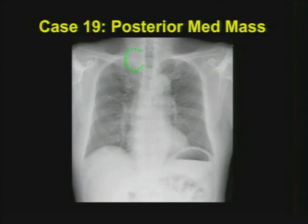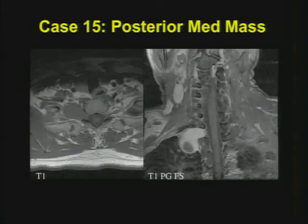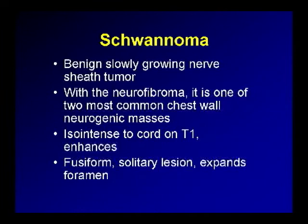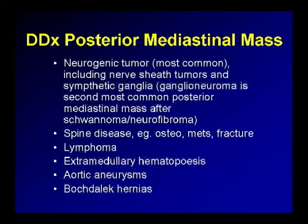Case number nineteen: posterior mediastinal mass differentials. Two major actors when looking at a smooth, circumscribed lesion adjacent to the spine: on MR, you can see it's emerging from the neural foramina with features of a schwannoma — this was a schwannoma, benign and slow-growing. The other major differential is neurofibroma. In the chest world, if you're presented with one of these and asked to biopsy it, your answer really should be no — putting a needle into a nerve makes the patient very unhappy. Differential for posterior mediastinal masses: neurogenic lesions, nerve sheath tumors, the spine — so osteomyelitis or tuberculous spondylitis — aortic aneurysms, Bochdalek hernias, and other things of that sort.